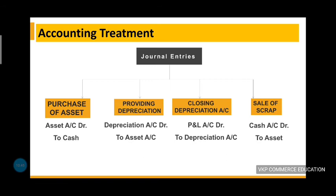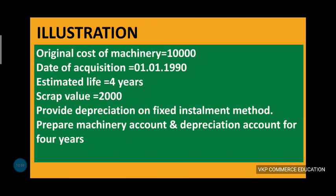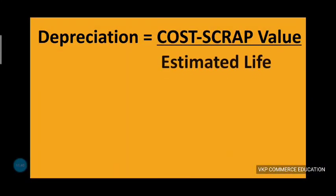Now let us look at a problem. The original cost of machinery is $10,000. Estimated life is 4 years. Scrap value is $2,000. Provide depreciation on the fixed installment method, that is, the straight line method. Prepare the machinery account and depreciation account for 4 years. The depreciation calculation is: cost minus scrap value, divided by estimated life.